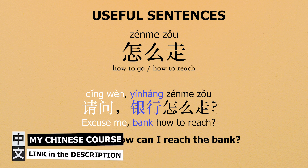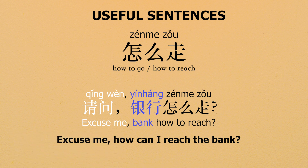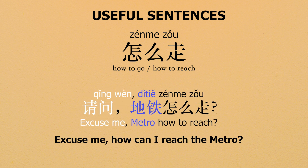请问 means excuse me and it's used to ask questions. Then we have 银行 in blue, which is bank. So you can replace this component of the sentence to ask how to go to another place. 怎么走 is how to go, how to walk, how to reach. So: excuse me, how can I reach the bank? Or if we change bank into 地铁, it becomes 请问地铁怎么走 — excuse me, how can I go to the metro?